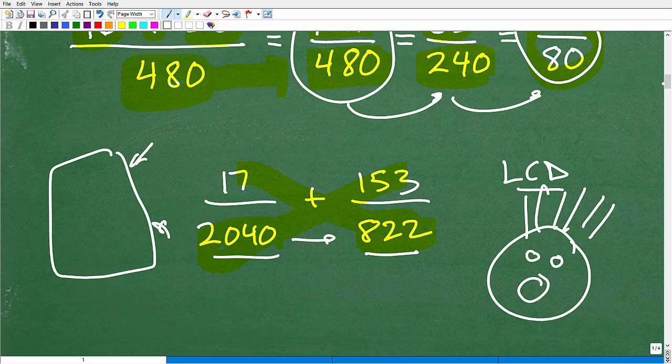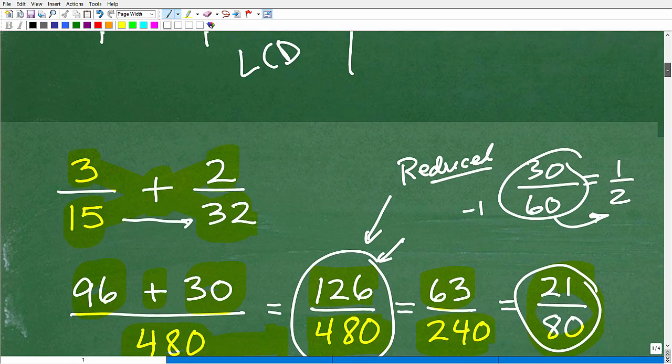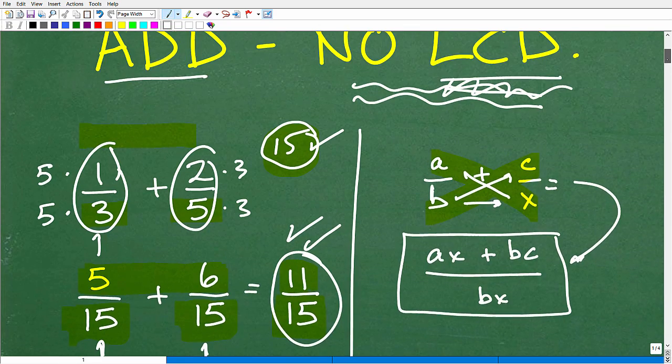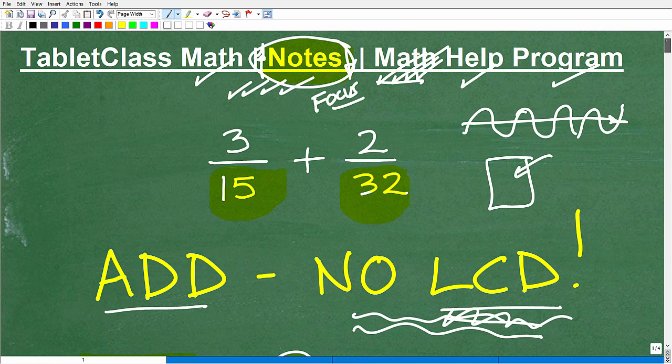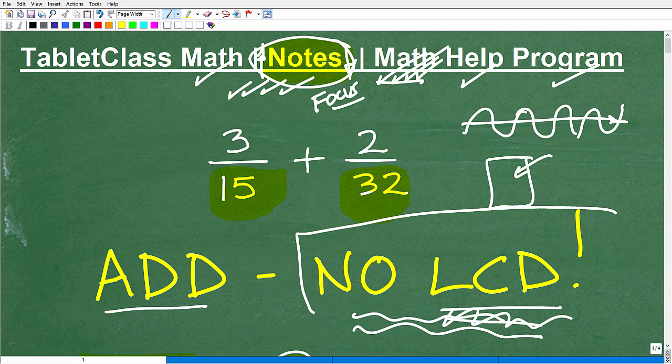But as much as I'm propping up this bowtie method as an excellent technique, it still doesn't exonerate you from knowing how to find the LCD. You need to know how to find the LCD not only for arithmetic but for algebra as well. And I have tons of videos on this in my pre-algebra and algebra playlist on my YouTube channel. Now, of course, I thoroughly teach this in my pre-algebra and algebra courses in my math help program as well.